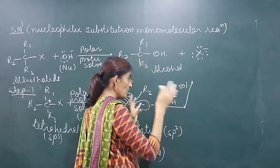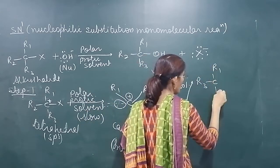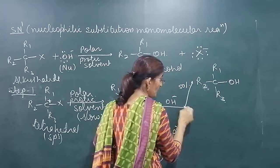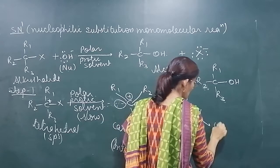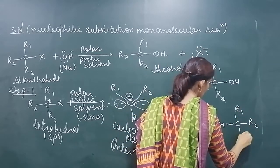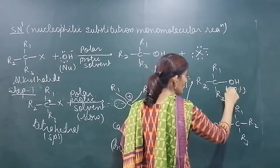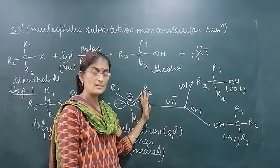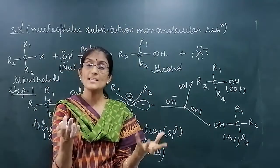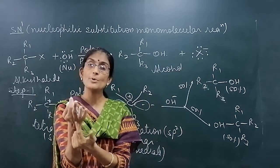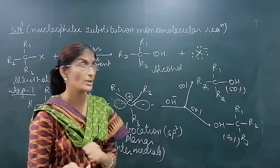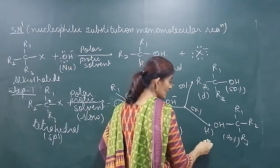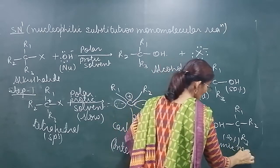There is a 50 percent chance it will attack from the top, so one type of product will be obtained — R1, R2, R3 with OH on one face — and 50 percent chance the inverted product is obtained with OH on the other face. So what is obtained? A racemic mixture is obtained. Because the carbocation is planar, OH can attack from the top or from the bottom — 50 percent each. If they are 50-50 percent, then the product obtained will be a racemic mixture: non-superimposable mirror images.